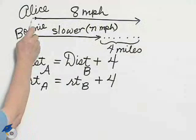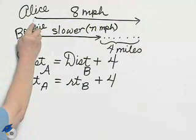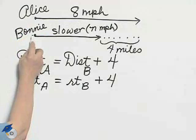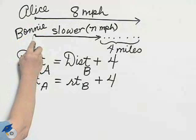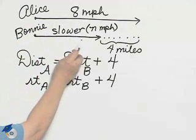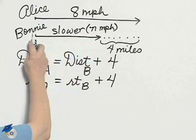Here is the picture of Alice's journey. She's traveling at 8. Bonnie doesn't get as far. She's going slower, and I let N stand for Bonnie's speed.